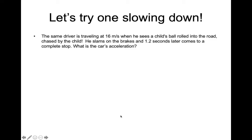Let's try an example where the object is slowing down. So the same driver is now traveling at 16 meters per second when he sees a child's ball roll into the road, chased by the child. Oh no, he slams on the brakes and 1.2 seconds later comes to a complete stop. What is the car's acceleration? Well, I'd like you to think about this. What is the initial speed of the driver? Well, it says he's traveling at 16 when he sees. So it looks like we're beginning at 16. This is going to be the initial speed. He sees the child chasing the ball and slams on the brakes 1.2 seconds later. That means after. Well, what comes after? The final speed. He comes to a complete stop. How fast is a complete stop? If you said zero, you're correct.